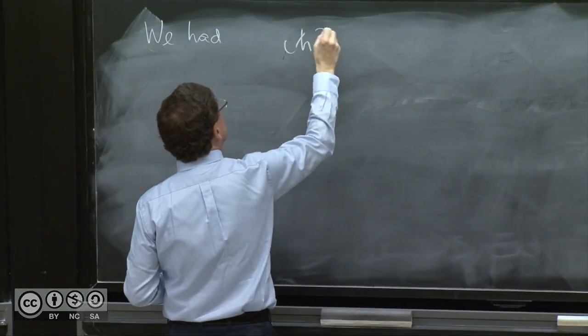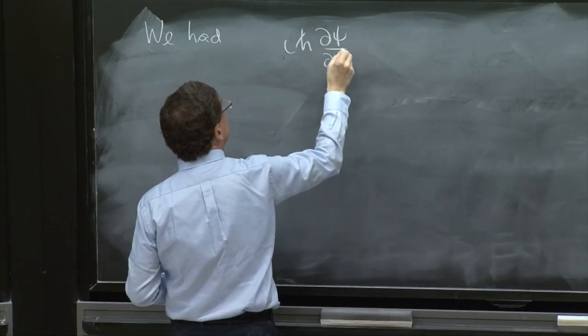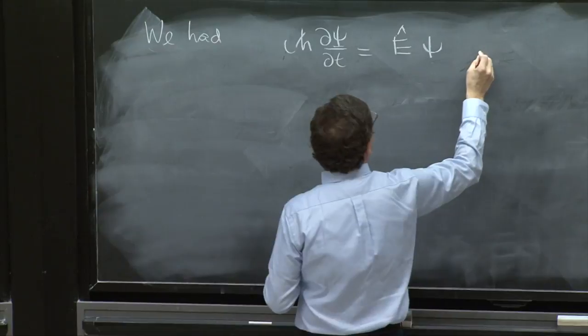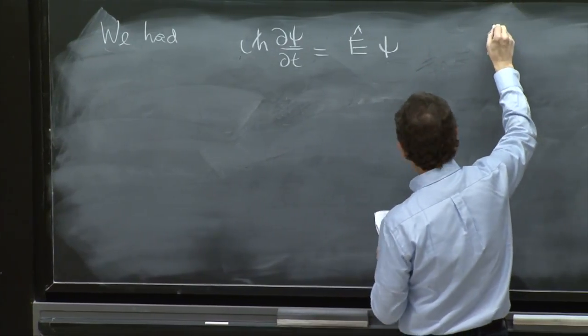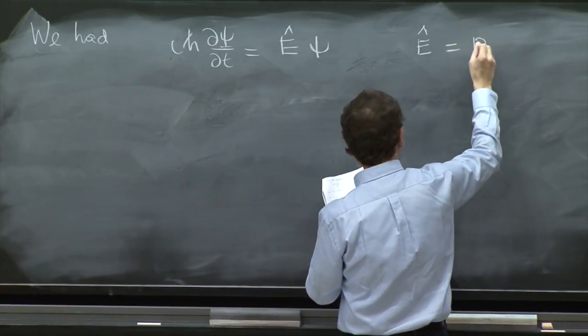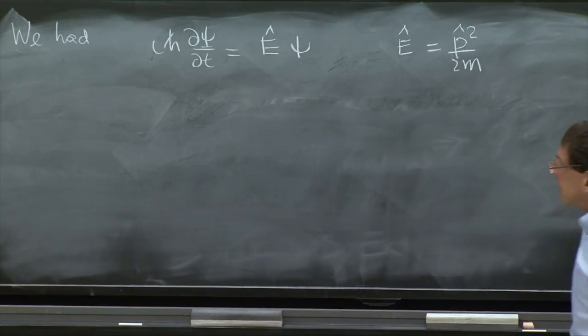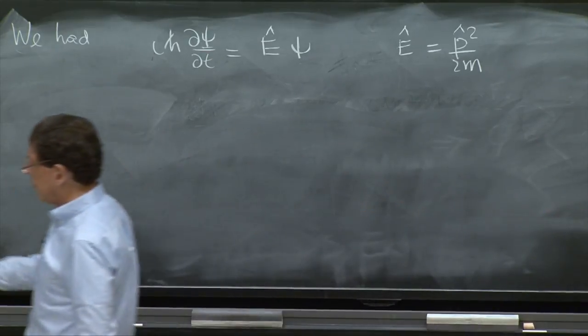i h bar d psi dt equals E psi, where E hat equals p squared over 2m, the operator. That is the Schrödinger equation, the free particle Schrödinger equation.